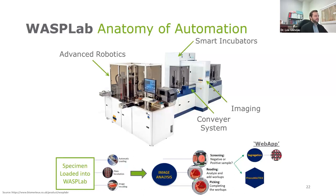This is how the WASP Lab works in a nutshell — very similar to how the BD Kiestra might work. At the front end, you have advanced robotics where all the plates are managed and specimens are loaded and planted. They're then fed along your conveyor system to the smart incubators, which are closed incubators with very optimal growth conditions for bacteria. When they're done incubating and ready to be imaged, they go to the imaging module. Walking through the workflow: the specimen is loaded into the WASP, it's planted, incubated, the image is recorded, and then you go to image analysis. You have options — you can do screening on the web application with separate workflows, or you can use the machine learning AI component called Phenomatrix to do that work for you.